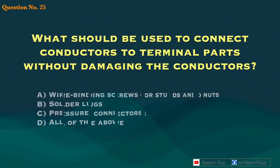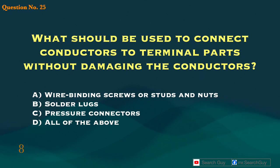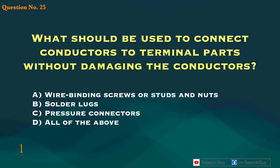Question 25. What should be used to connect conductors to terminal parts without damaging the conductors? A. Wire binding screws or studs and nuts. B. Solder lugs. C. Pressure connectors. D. All of the above. Answer: D. All of the above.